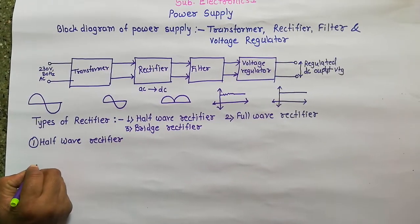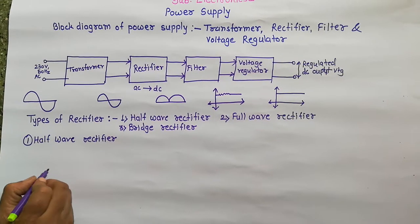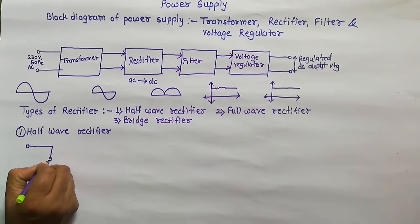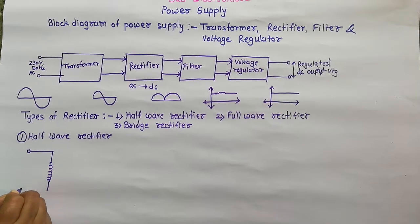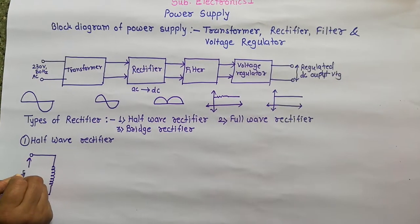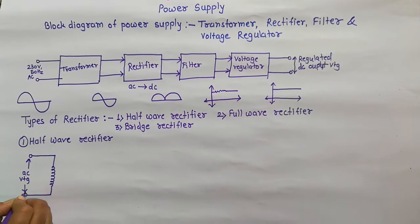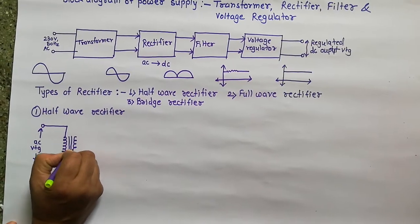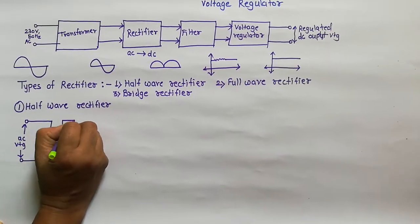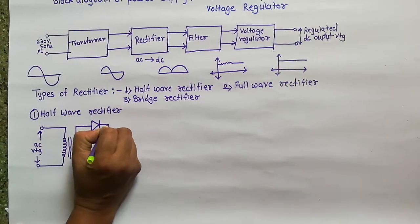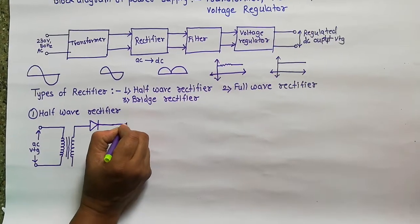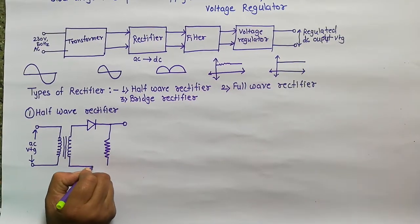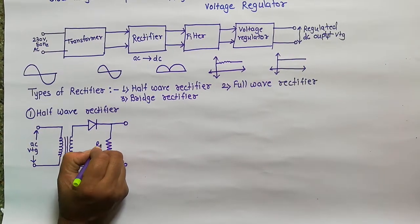In the case of a half wave rectifier, there is a single diode, transformer, and load resistor. We draw the circuit diagram of the half wave rectifier. The primary of the transformer is given AC voltage of 230 volts 50 Hz. The secondary of the transformer is applied to a diode D, which is connected in series with a load resistor RL, across which we get a DC output.